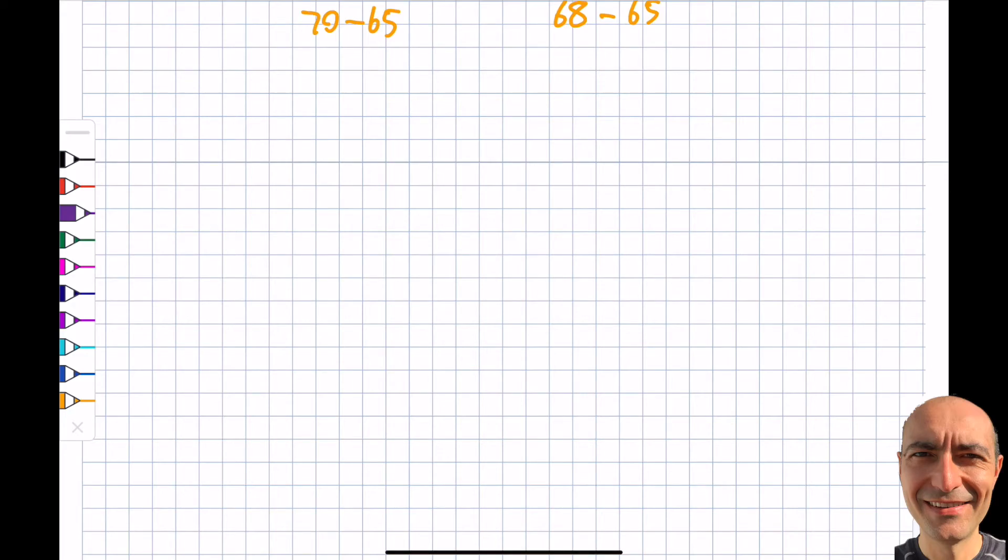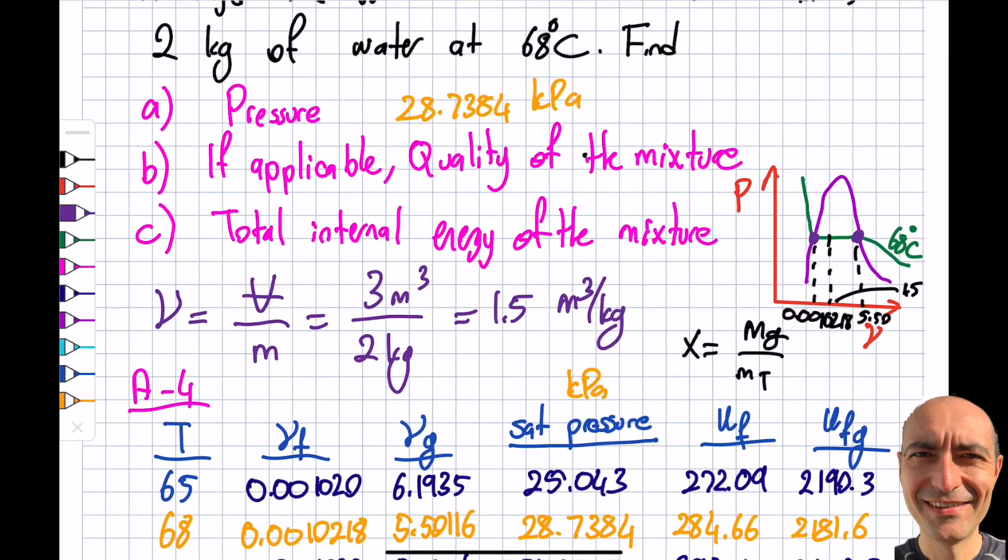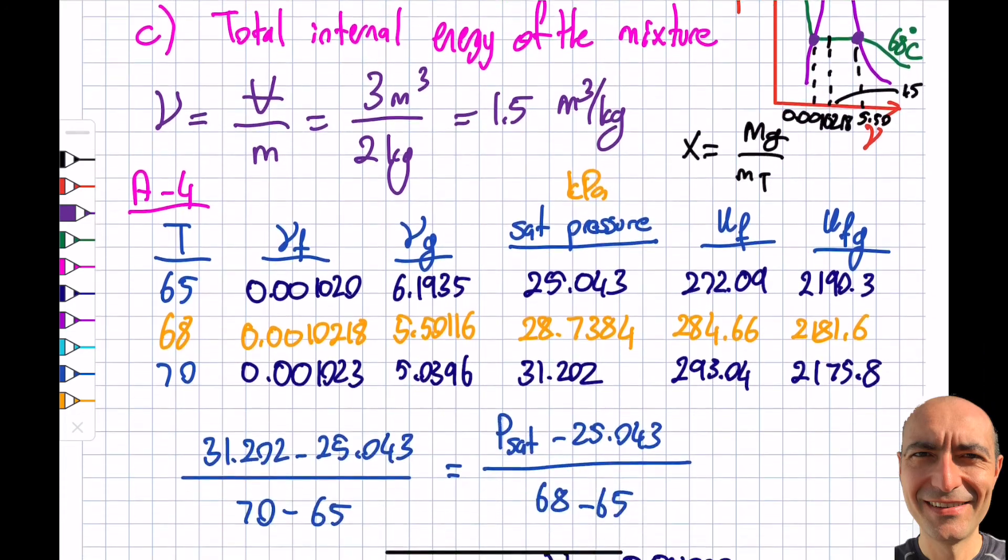Now I know that I will be able to go and find my x value. And the x value will be fine like this. The specific volume, as I mentioned, given to me, plus x times VFG. So I can simply write it. So 1.5, that's, I know it, I find it. 0.0010218 plus x, which I don't know, of 5.5116 minus 0.0010218. So then you just simplify this x value in here. It's just one equation, one unknown. So you find it to be 0.2725. So this will be your answer. 0.2725 will be my x value.